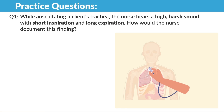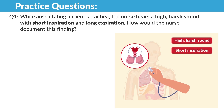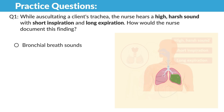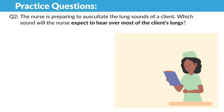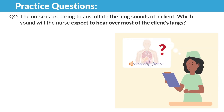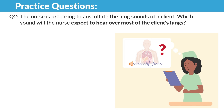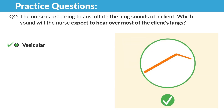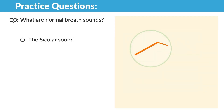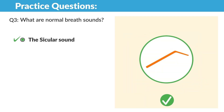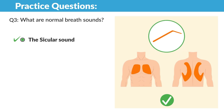Now for a few practice questions. While auscultating a client's trachea, the nurse hears a high, harsh sound with short inspiration and long expiration — how should the nurse document this? Bronchial breath sounds. Question two: which sound will the nurse expect to hear over most of the client's lungs? Vesicular. And the last question: what are normal breath sounds? Vesicular sounds, which are soft, low-pitched, and breezy, heard over most of the peripheral lung fields. That was actually from Kaplan.